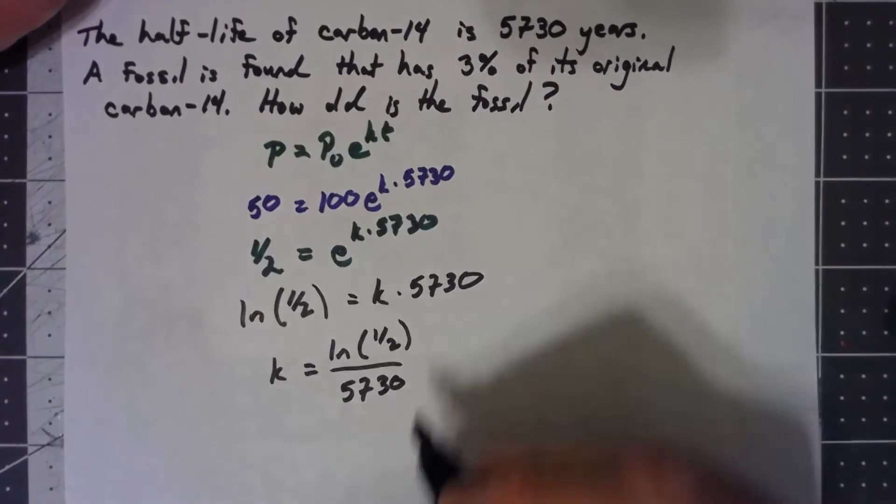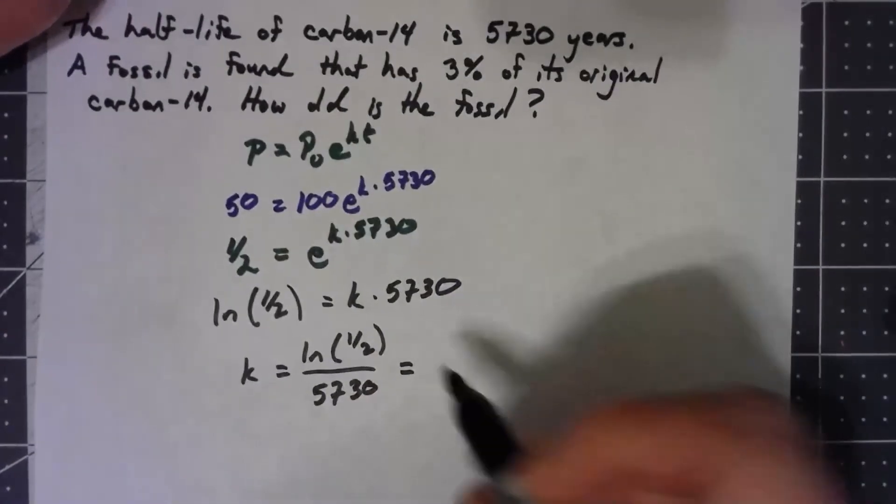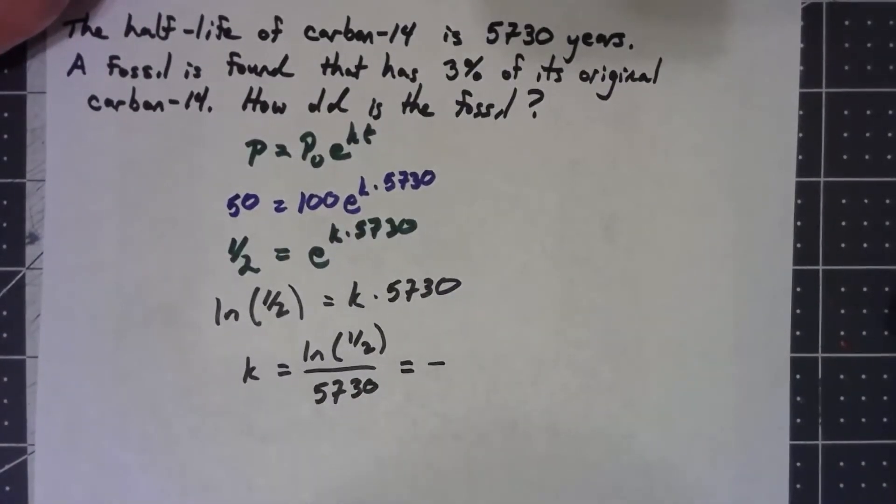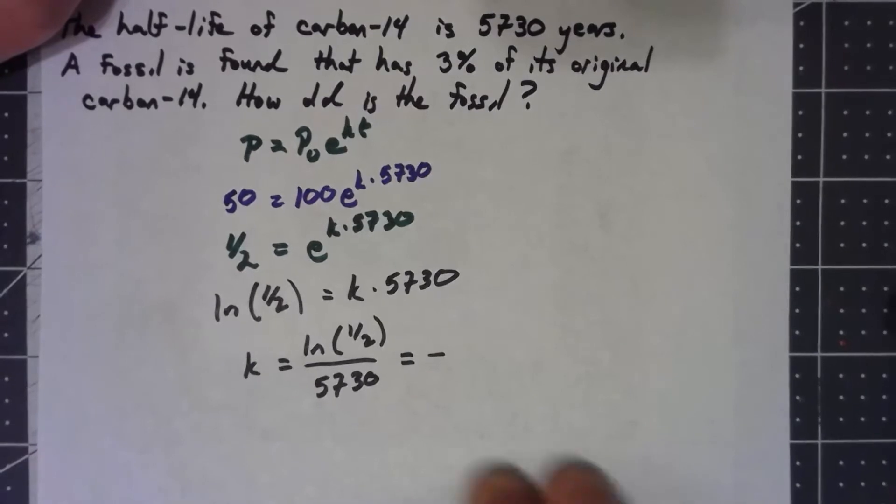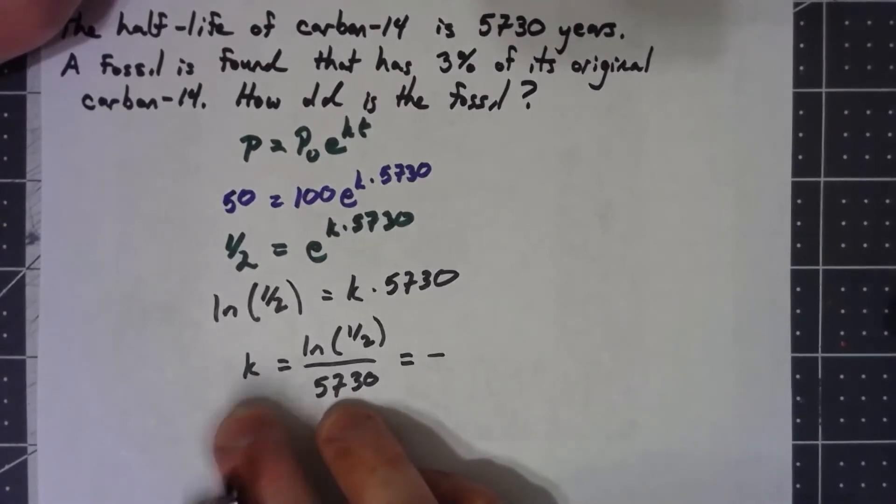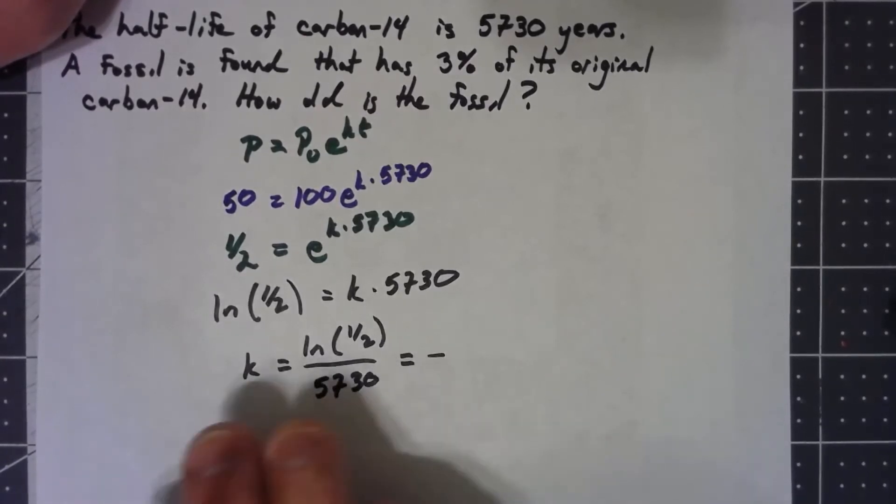Now there's two things about this. First thing that you want to notice when you plug this into the calculator, you get a negative number. And to some extent that makes sense. That should make sense because remember the K is kind of a measure of how fast it's growing. And here we've got something that's dying out. We're getting less and less material there instead of more and more. So we have negative growth.